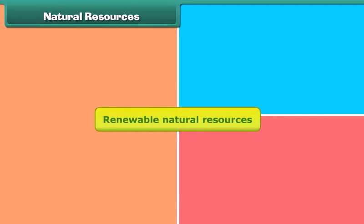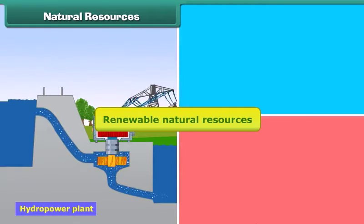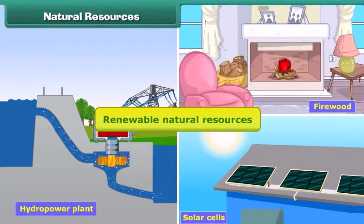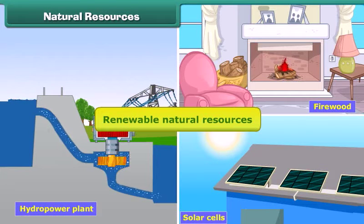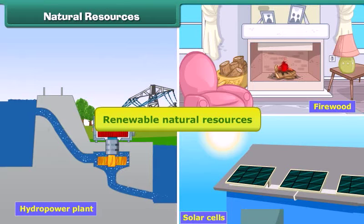Renewable natural resources are those resources that are not exhausted by human use. They are reformed and are available for continuous human use. For example, sunlight, water, trees, etc. are renewable natural resources.